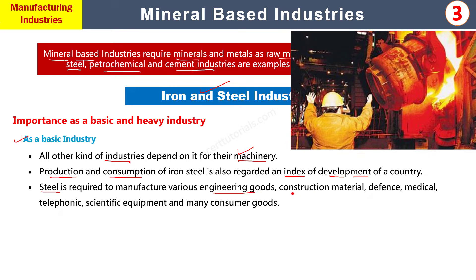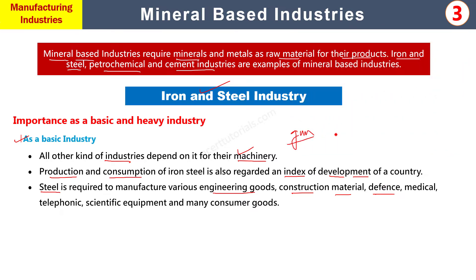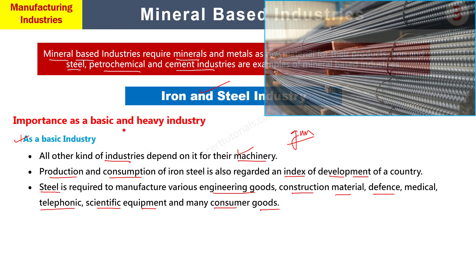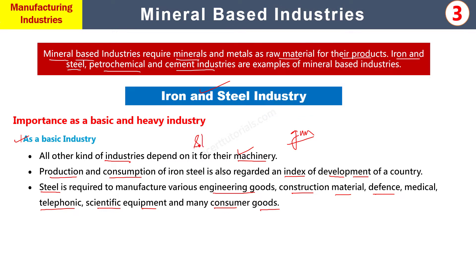Defense سے related چیزیں جیسے tanks، توپیں، اور gun factory جو ammunition بناتی ہے اسے بھی metal supply iron اور steel industry سے ہی ملتی ہے۔ Scientific equipment اور بہت سے consumer goods بھی اس پر depend کرتے ہیں۔ Steel بھی iron میں carbon کو mix کرنے سے بنتا ہے اور carbon کا ratio لگ بھگ 0.1 سے 1% کے اندر ہوتا ہے۔